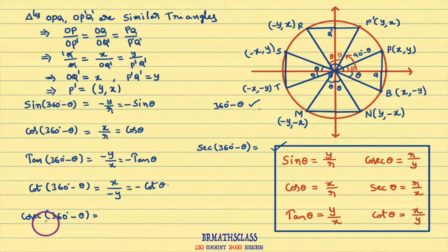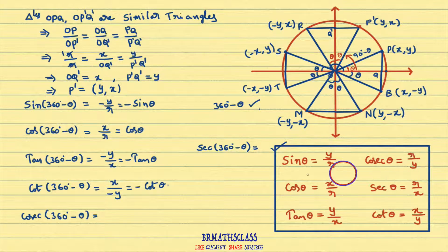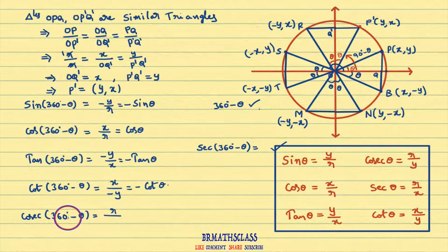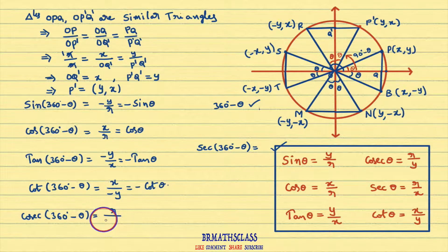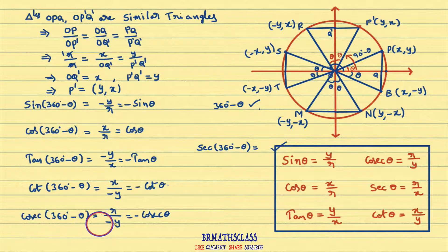Now we will learn cosecant(360° − θ). Cosecant theta is defined as r divided by the y coordinate of the point. Here cosecant(360° − θ) is r divided by the y coordinate of point B. The y coordinate of point B is minus y, so that equals minus r by y. Since r by y is cosecant theta, therefore cosecant(360° − θ) = −cosecant θ.